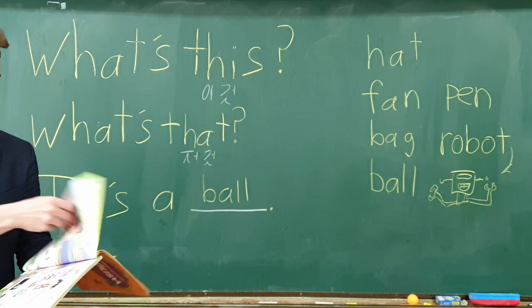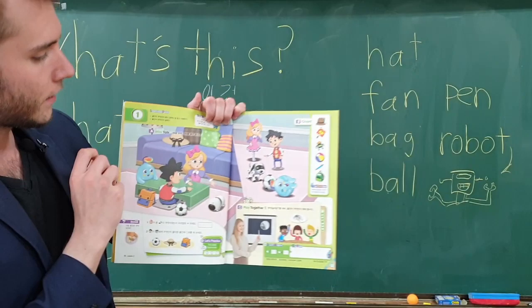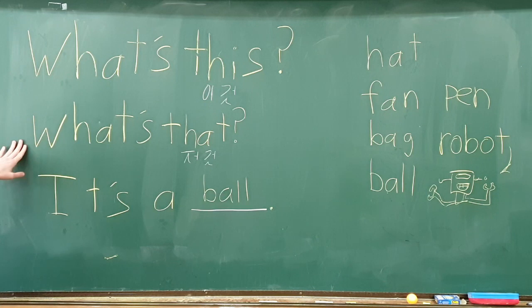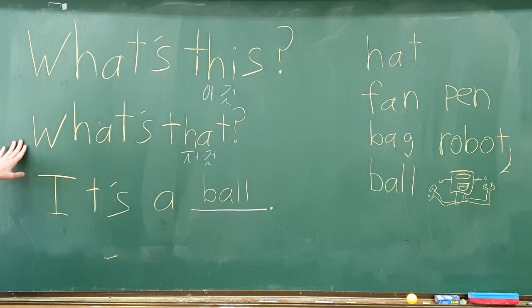So in your textbook, check out the mini talk and we'll be practicing your new sentences: 'What's this?', 'What's that?', and 'It's a ball', 'It's a robot', 'It's a hat', all those words there. That's all for now. See you next time.